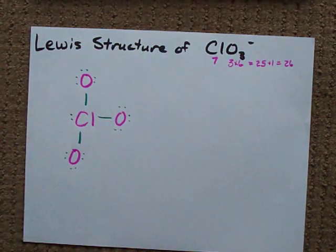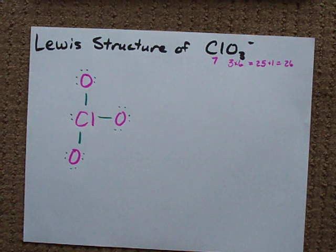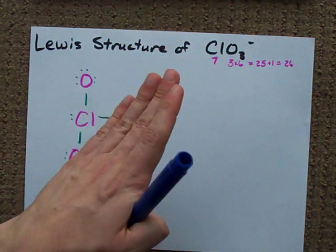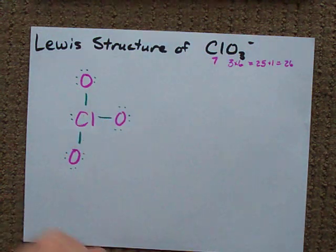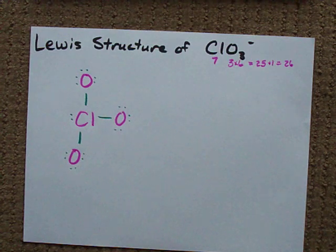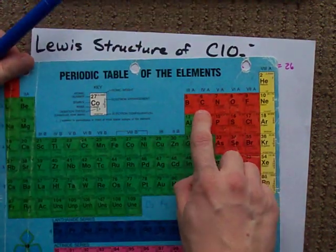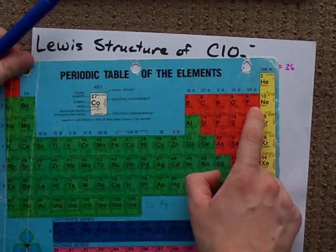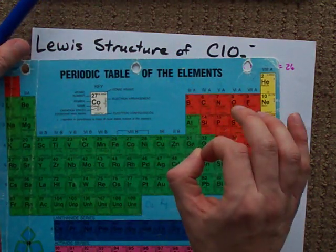Now, this may look like it's okay, but chlorine can have an expanded octet. The way that you know that is because it's not in the second row. Anything other than C, N, O, or F can have an expanded octet.